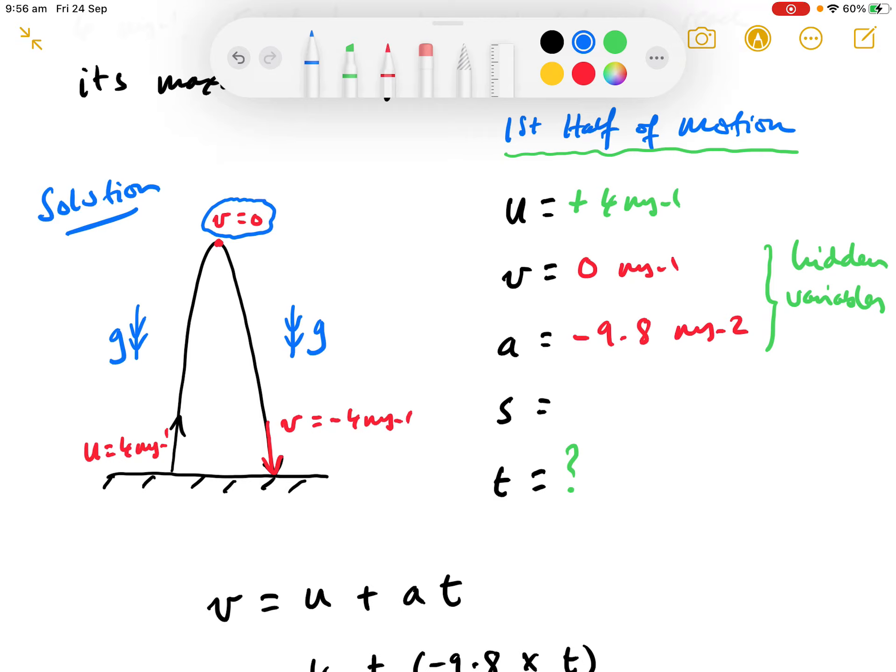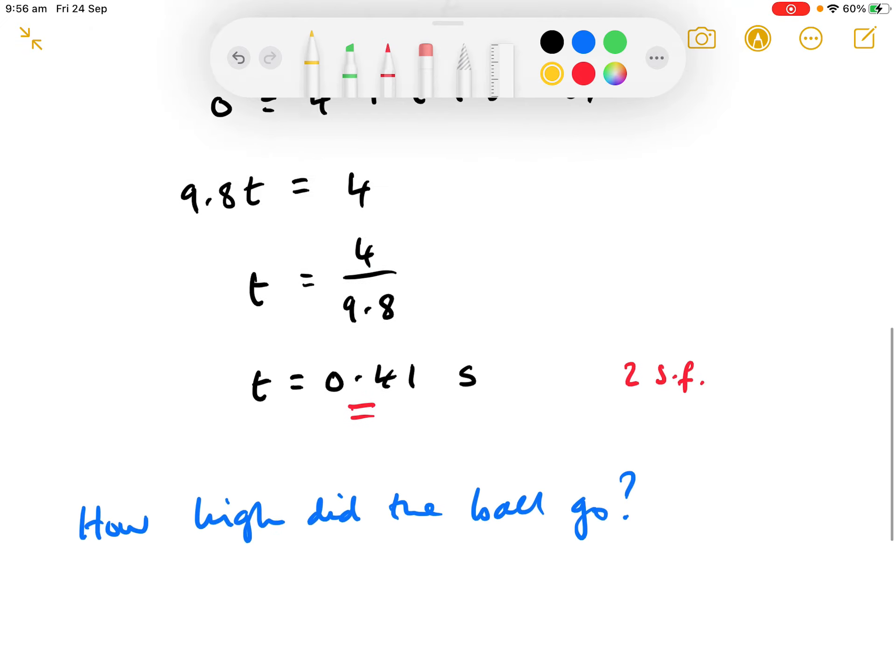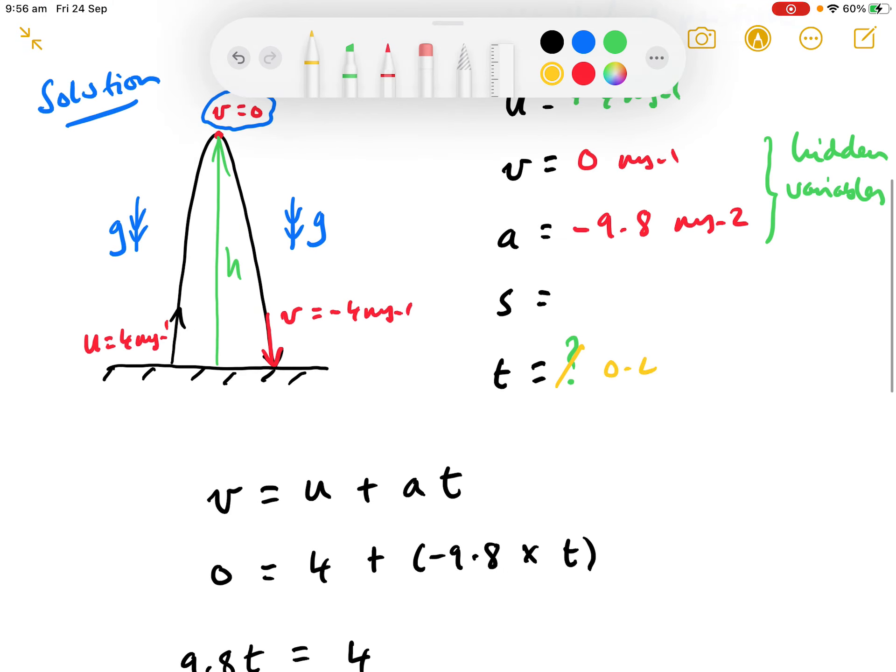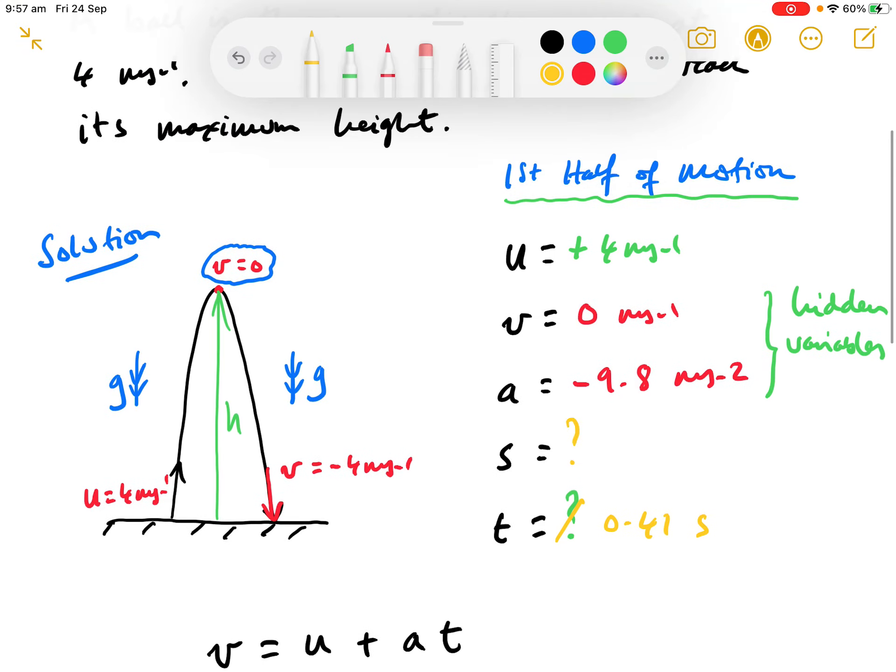Basically, it's the same acceleration. When the acceleration changes, then the motion changes and you have to reapply u, v, a, s, and t. But we're still dealing with the same motion. And we're interested now in how high it goes. So, we're looking for the height h that it's reached. Well, because it's the same motion, we can use the same variables. So, we now know that t is 0.41 seconds. And we can say, okay, let's find s.